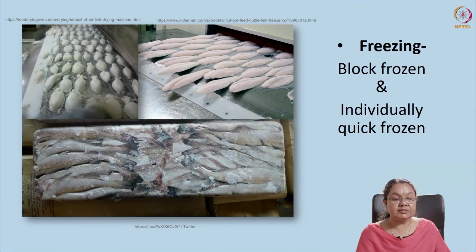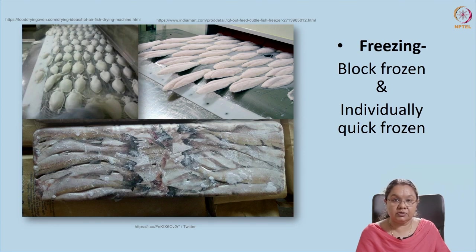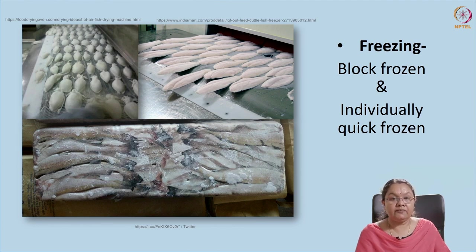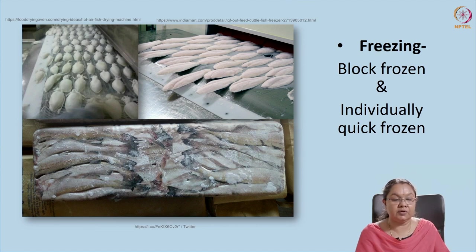The next method is freezing. We can go for block freezers or individually quick frozen (IQF) products. In block freezing, bulk quantities are received and packed immediately using plate freezers and tunnel freezers. Cryogenic freezers and other types of freezers are available for developing individually quick frozen products.